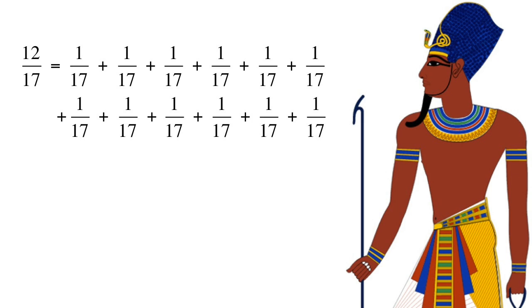Of course, we could write a fraction like twelve over seventeen like this, but the Egyptians also wanted the denominators to be distinct. So, for example, we could write this.